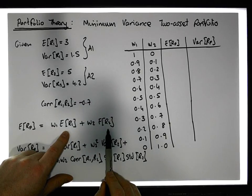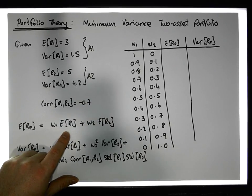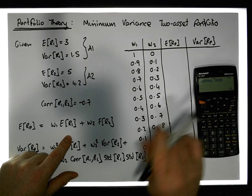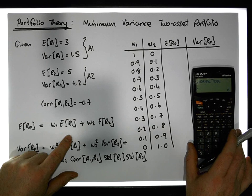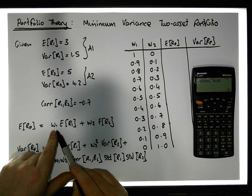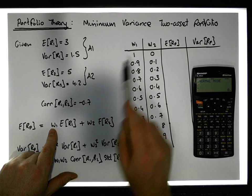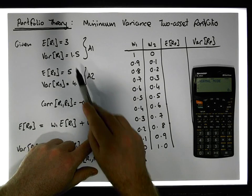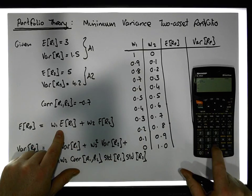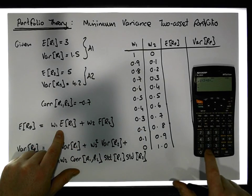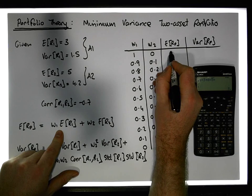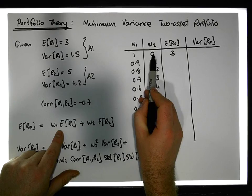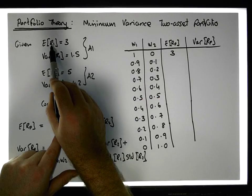We're looking at the expected returns of asset one and asset two in the mix. I've already calculated this. The value is w1 times the expected return of asset one, so it's 1 times 3 plus 0 times 5. As expected, we get three percent — when we have 100% of asset one in the mix and zero percent of asset two, the return is what we expect from asset one.